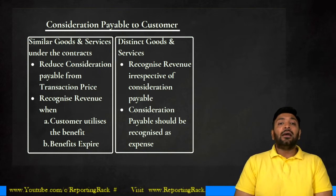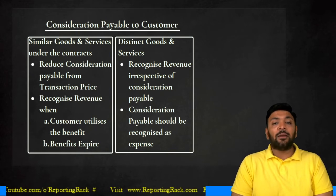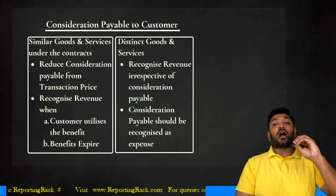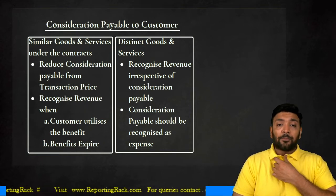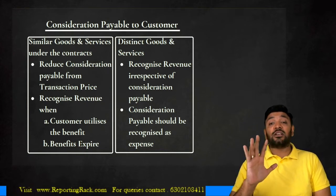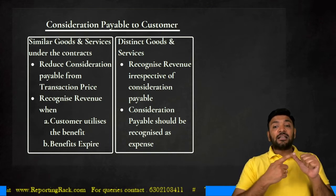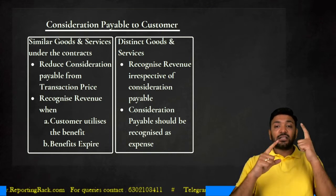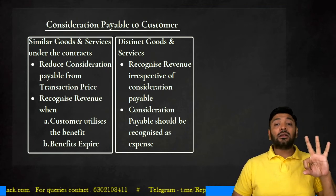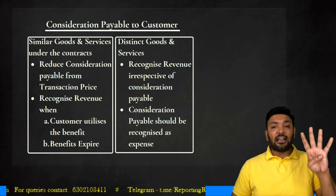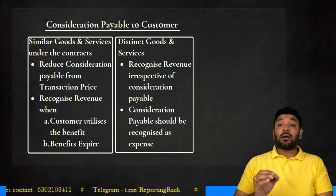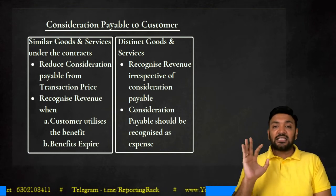To summarize: if it is for a similar good or service, reduce the consideration payable from transaction price and recognize revenue when the customer utilizes the benefit or when it expires. If it is a distinct good, recognize revenue irrespective of consideration payable, and recognize the consideration payable as expense at cost to the company. These are the five adjustments to transaction price: variable consideration, constraint on variable consideration, time value of money, non-cash consideration, and consideration payable to customer. This brings us to the end of step three — determination of transaction price.